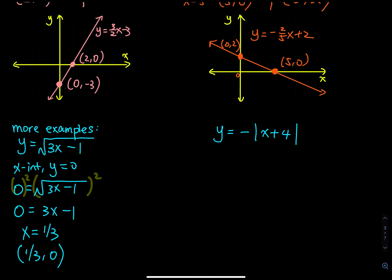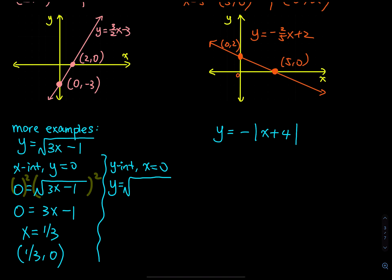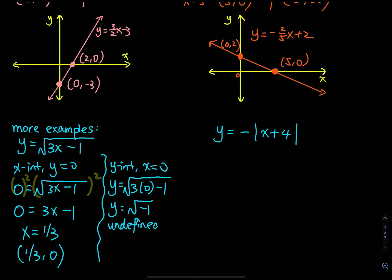For the y-intercept, let x equal to 0: y = √(3(0) minus 1) = √(negative 1). The square root of a negative number is undefined, so there is no y-intercept for this equation.